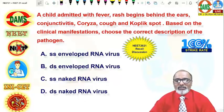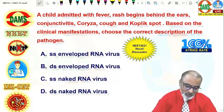A child admitted with fever and rash begins behind the ears, conjunctivitis, coryza, cough and Koplik spot. What may be the diagnosis?